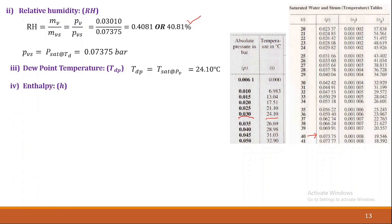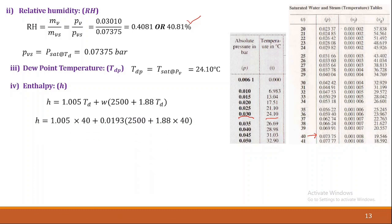Next is enthalpy. The formula for enthalpy of moist air is: H = 1.005 × TD + W × (2500 + 1.88 × TD). TD is 40 degrees Celsius and W = 0.0193 kg/kg of dry air. So H = 1.005 × 40 + 0.0193 × (2500 + 1.88 × 40) = 89.9 kJ per kg of dry air. This way we have solved all the values in the problem.